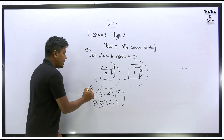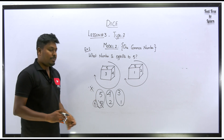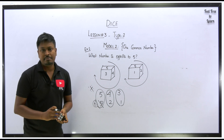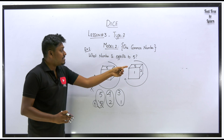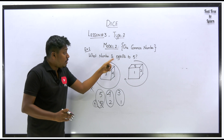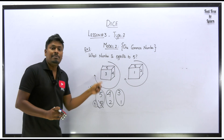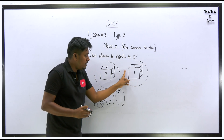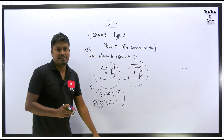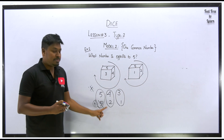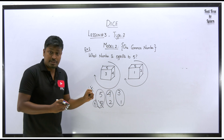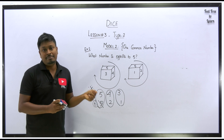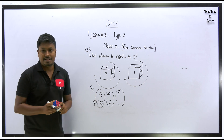This shortcut can be applied to all types of dice questions. The key rule is: always start the clockwise series from the common number. After writing both series, the aligned pairs are opposite faces. The unmatched common number takes the remaining face as its opposite.